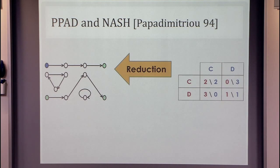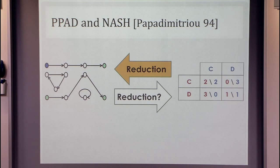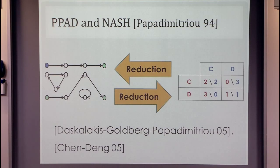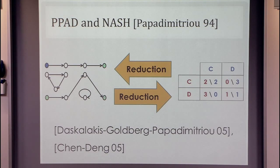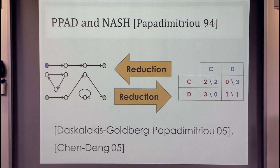Papadimitriou showed that Nash is contained in PPAD by giving a reduction to End-of-the-Line, and he also conjectured that Nash is in fact PPAD-complete. Ten years later, in a remarkable sequence of work, Daskalakis, Goldberg, and Papadimitriou and Chen and Deng proved this conjecture — showing that you can solve an arbitrary End-of-the-Line instance by just finding the Nash equilibrium of some related game. The bottom line is that PPAD exactly captures the complexity of finding a Nash equilibrium, and from now on we can just focus on understanding the End-of-the-Line problem.